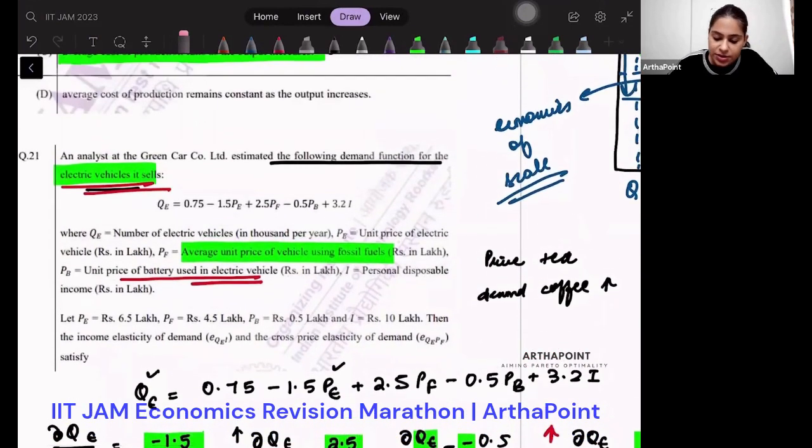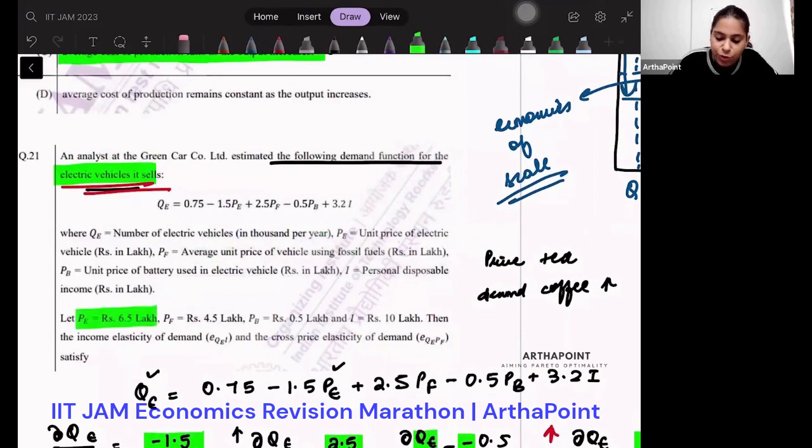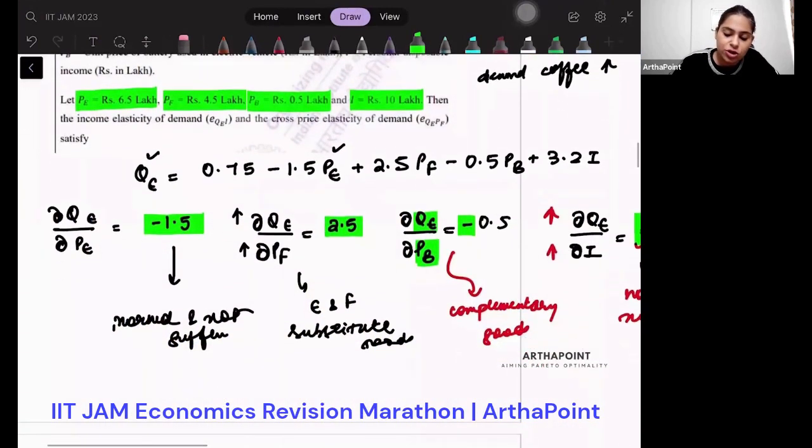Now, let's go to the next part. So they are saying that they have given us the values. What are the values given to us? PE is 6.5, you put 6.5 here. PF is 4.5, you put 4.5 here. PB is 0.5, you put 0.5 here. I is 10 lakh, you put 10 here. So what will come out to be your QE?